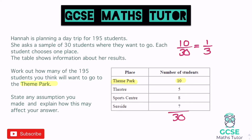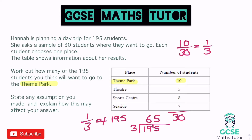So we know a third of the students, based on the sample, are going to want to go to the theme park. If she's going to ask 195 students, we just need to work out one third of 195. Doing this without a calculator, we use bus stop division: 195 divided by 3. 3 goes into 19 six times (up to 18, remainder 1), then into 15 five times. Our answer is 65 students.